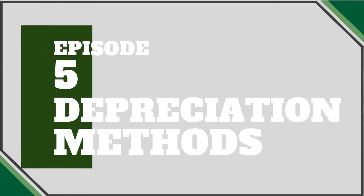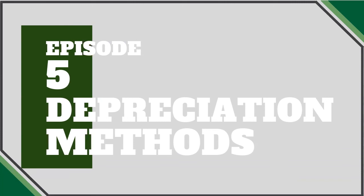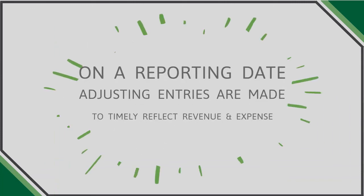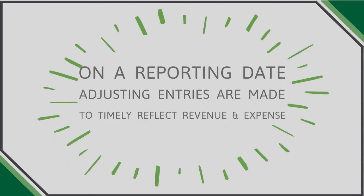In episode five, I'll further explain the various types of depreciation under U.S. GAAP. To recap, a company should look at its activity on a monthly, quarterly, and annual basis. To the extent adjusting entries are needed to reflect the proper timing of revenue and expenses, as well as the appropriate value of assets and liabilities, the company should record those adjusting entries to ensure their financials are accurate.